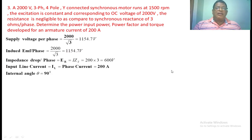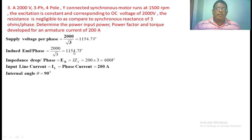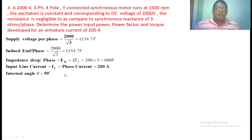First we find the per phase supply voltage: 2000 by root 3, equal to 1154.7 volts. The induced voltage in open circuit is also given — the counter voltage per phase equals 2000 by root 3, again 1154.7 volts, since both are the same. The impedance drop ER equals I into Zs: 200 into 3, giving 300 volts. Since it is star connected, line current equals phase current, so 200 amperes. The resistance is neglected, so the internal angle is 90 degrees.